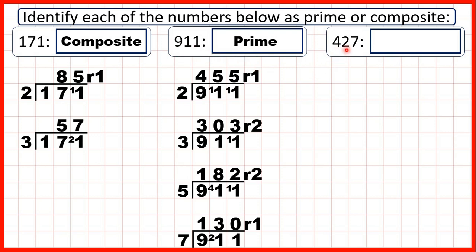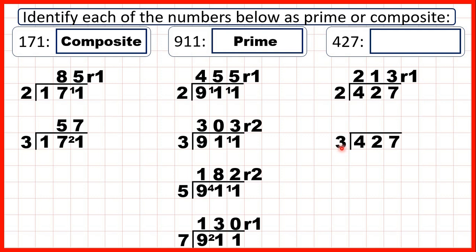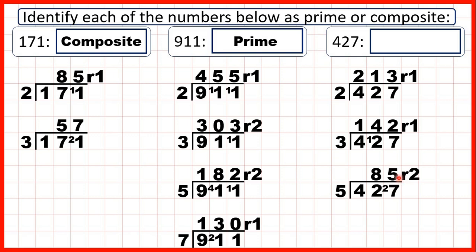Now we have 427. We know that it doesn't end in a 0, 2, 4, 6 or 8, so it's not a multiple of 2. If we try to divide it by 3, we add the digits together: 4 plus 2 plus 7 is 13. 13 is not in the 3 times table, so we know that the division will give us a remainder. 427 is also not a multiple of 5 because all multiples of 5 end in a 5 or 0. So now we just need to divide by 7. If we get a remainder we'll have a prime number, otherwise 427 must be a composite number.